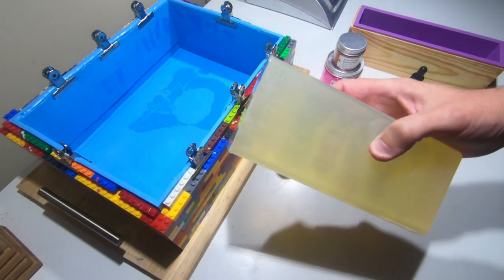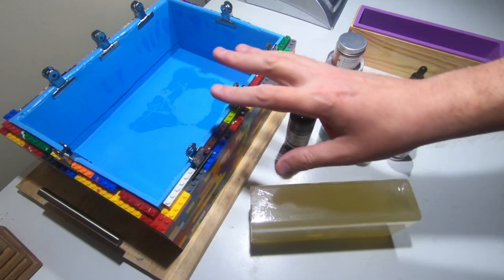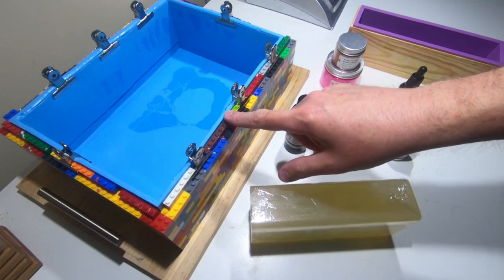So here we have some clear melt and pour base. We have my big slab mold. Now I'm only going to use this to make sort of like an embed and I'll explain that in just a moment.